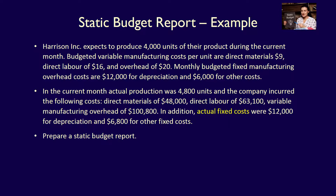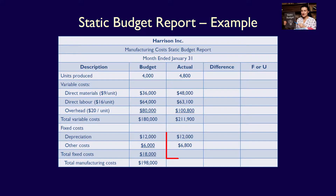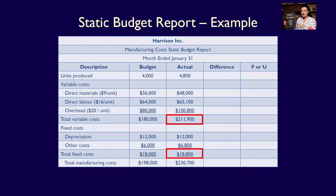Moving on to the actual fixed costs: actual depreciation is $12,000 and actual other fixed costs are $6,800. Total actual fixed costs are therefore $18,800. Adding total variable costs of $211,900 and total fixed costs of $18,800, we get total actual manufacturing costs of $230,700.